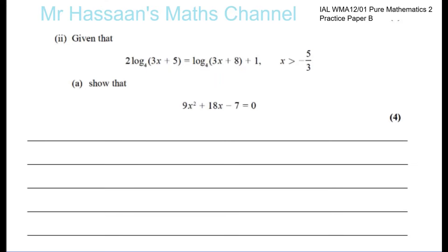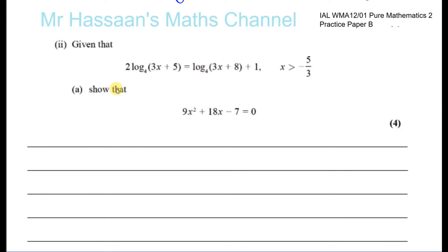It says, given that 2 log to the base 4 of 3x plus 5 is equal to log to the base 4 of 3x plus 8 plus 1, and x is greater than minus 5 over 3, show that this is true. So I want to combine the logs together into one term. So what I'll do is, I will, first of all, I'll write this using the power law, because combining logs can only be done when you don't have something multiplying them.